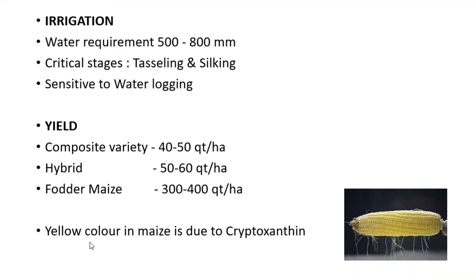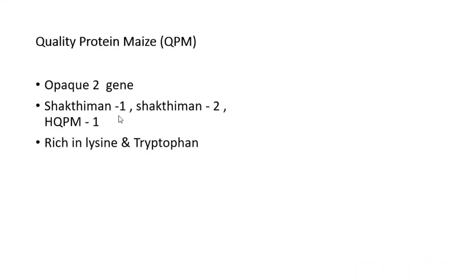The yellow color in maize is due to the presence of cryptoxanthin. An important topic is quality protein maize: cereals are generally deficient in lysine and tryptophan. To enrich maize with these amino acids, the opaque-2 gene was introduced. Using this gene, lysine and tryptophan-rich maize varieties — Shaktiman 1, Shaktiman 2, and High Quality Protein Maize 1 — were developed and released, and they are termed quality protein maize.